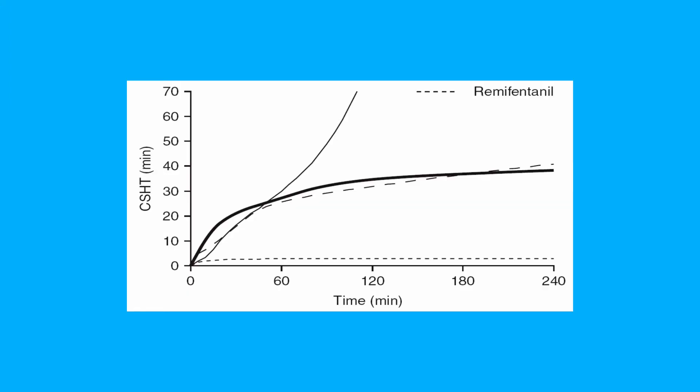This is the context-sensitive half-time graph for remifentanil in addition to other agents. Time in minutes is on the x-axis, representing increasing duration of infusion. The y-axis is context-sensitive half-time in minutes. The context-sensitive half-time is the time required for blood concentration to decrease by 50% after discontinuation of drug administration.